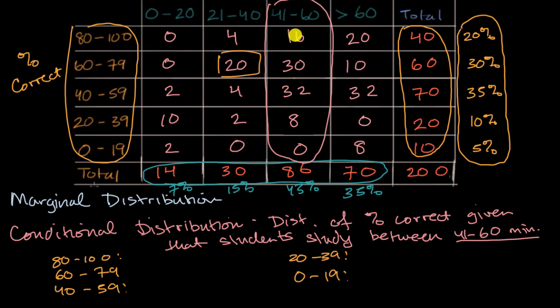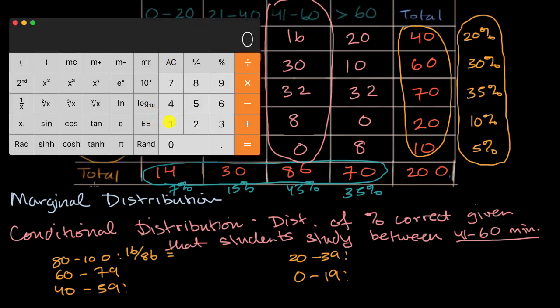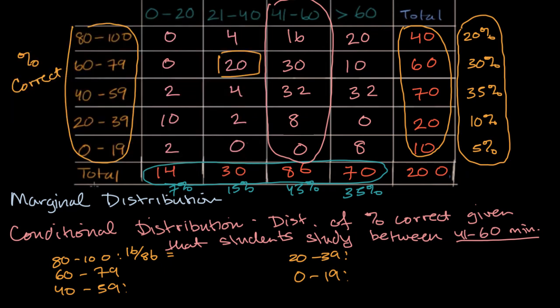So this first one, 80 to 100, it would be 16 out of the 86 students. So we would write 16 out of 86, which is equal to... 16 divided by 86 is equal to, I'll just round to one decimal place, it's roughly 18.6 percent. And then to get the full conditional distribution, we would keep doing that.